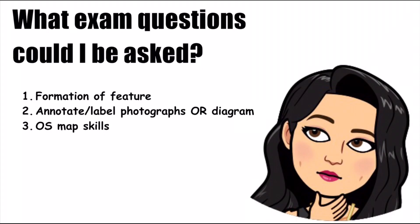If we think about what type of exam questions we could be asked, we could be asked about the formation of V-shaped valley and interlocking spurs, how they're made. We could be asked to label photographs, annotate the photographs, maybe even a diagram, or we could be asked some type of OS map skill question.